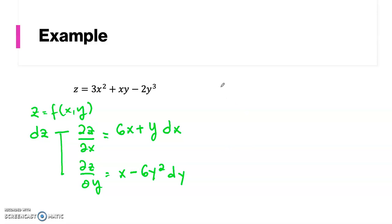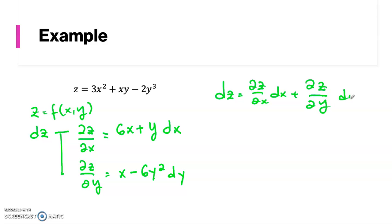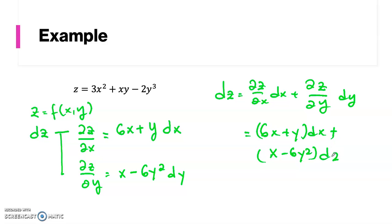Thus, the total differentiation is: dz = (∂z/∂x)dx + (∂z/∂y)dy. So we have dz = (6x + y)dx + (x − 6y²)dy. This is our total differential of this function.